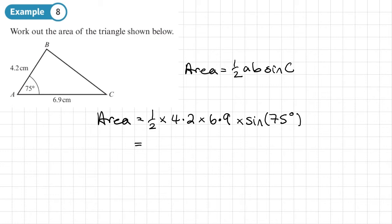So on my calculator, I get 13.9962 dot dot dot. I'll give my answer to three significant figures. So it's going to be 14.0 centimetres squared. I'll just put our rounding there.